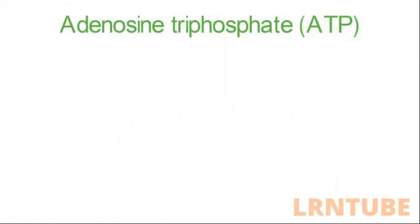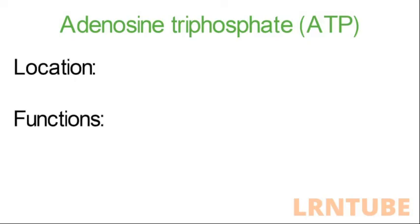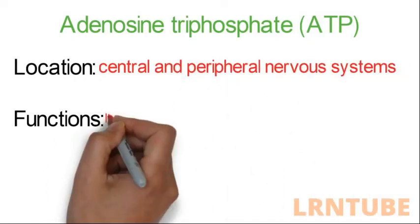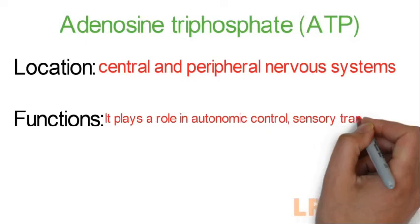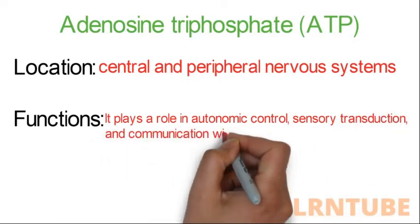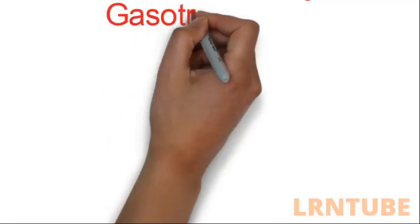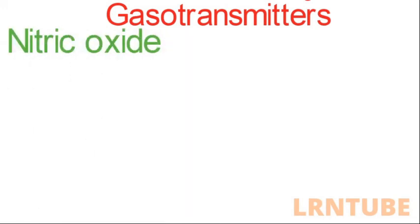Adenosine triphosphate, or ATP, is considered the energy currency of life. ATP acts as a neurotransmitter in the central and peripheral nervous systems, playing a role in autonomic control, sensory transduction, and communication with glial cells.